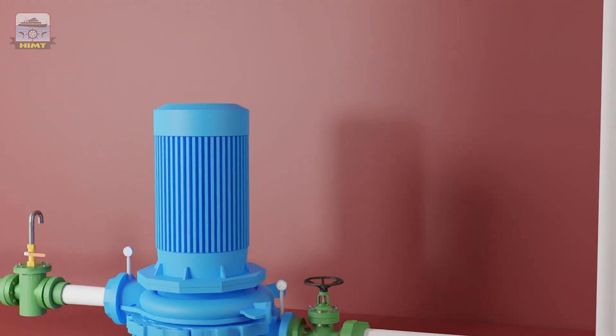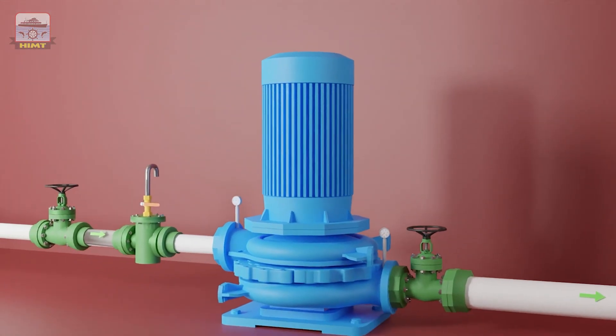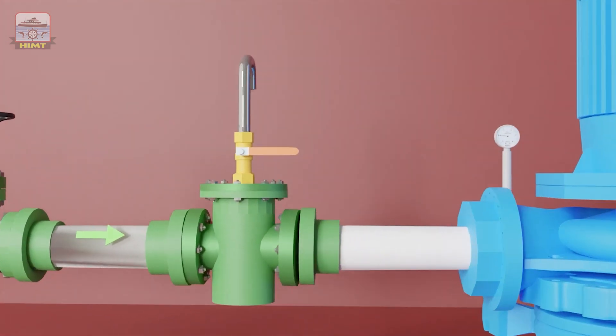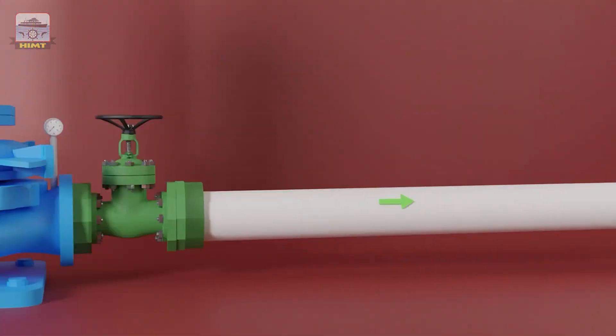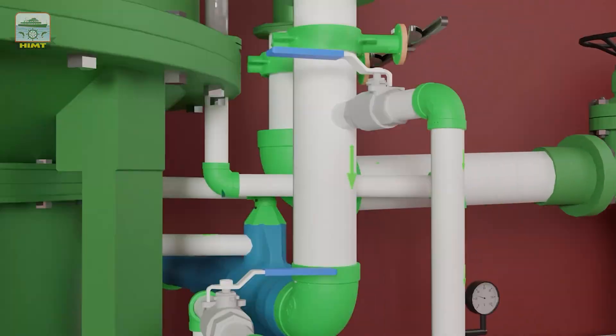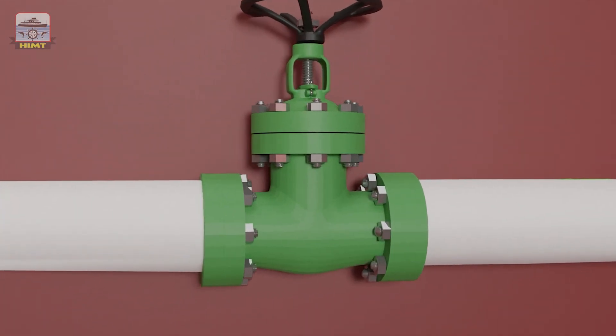This is the ejector pump, and it is responsible for creating a vacuum in the generator and to supply sea water. We do also have a strainer in the suction side of the ejector pump which filters out any impurities or debris from the water before it enters the pump. This is the overboard valve of the ejector pump which allows for the discharge of water from the system after its usage.